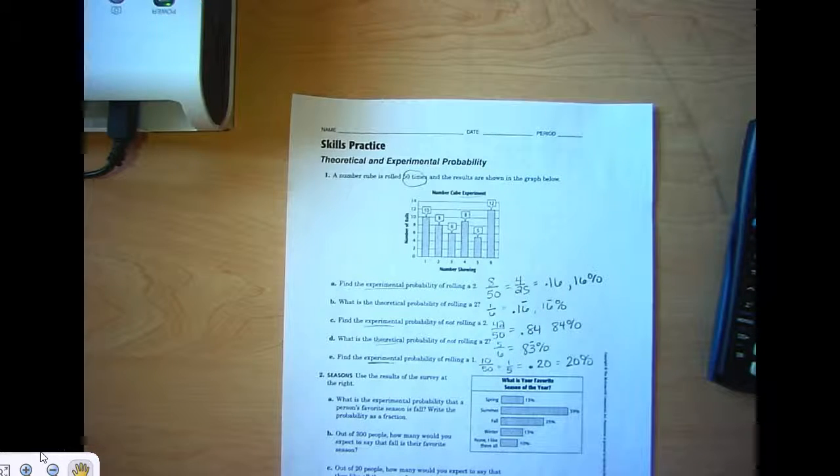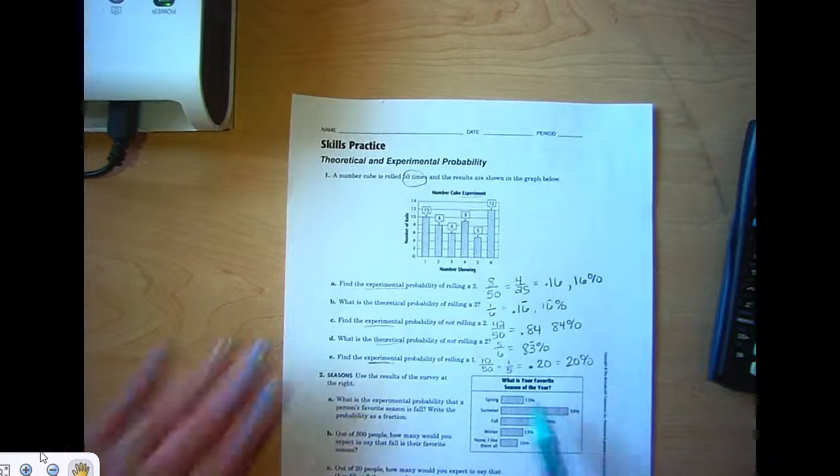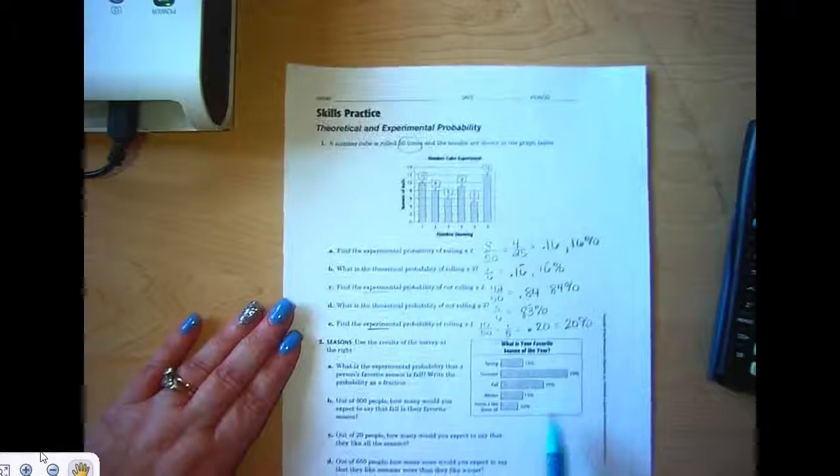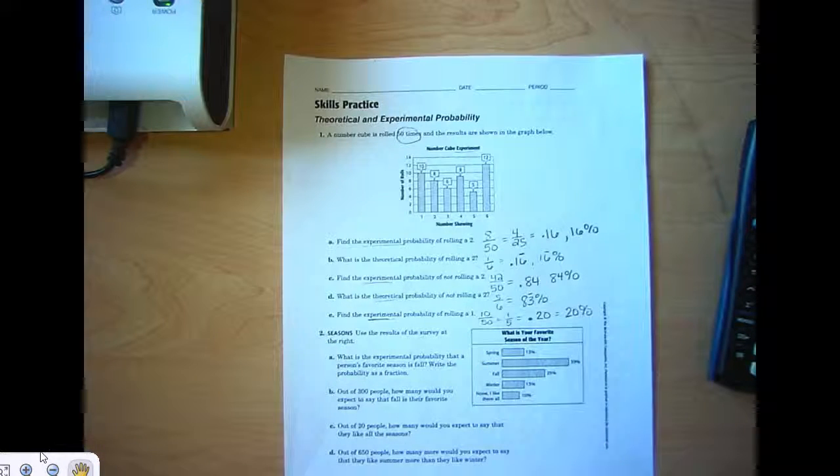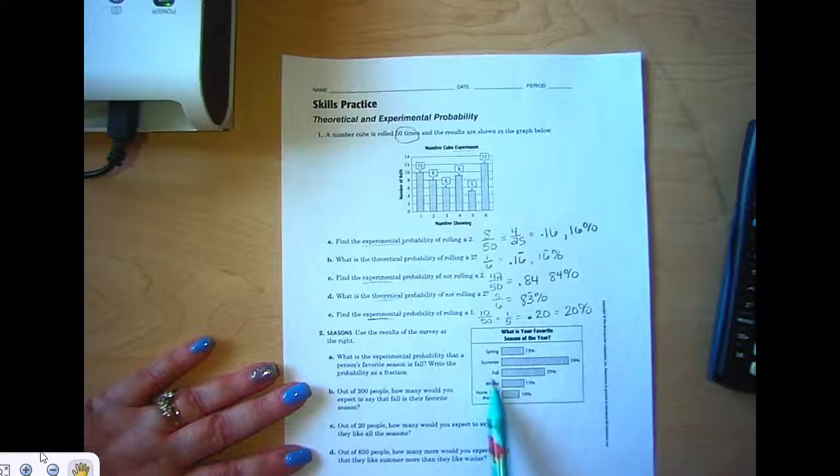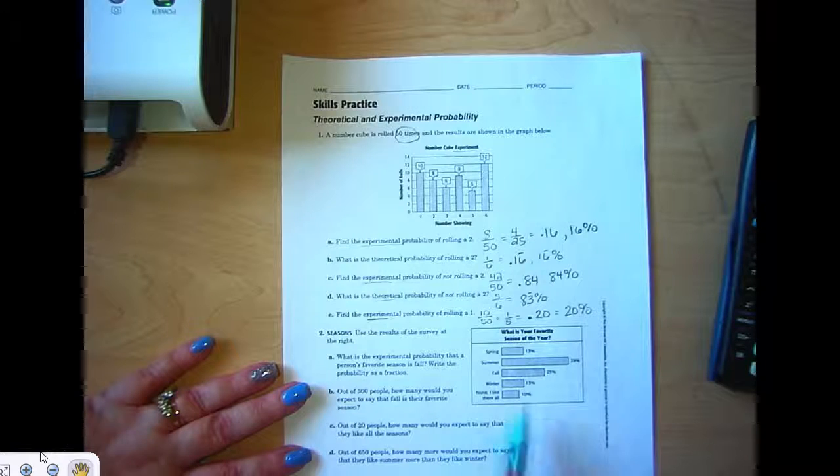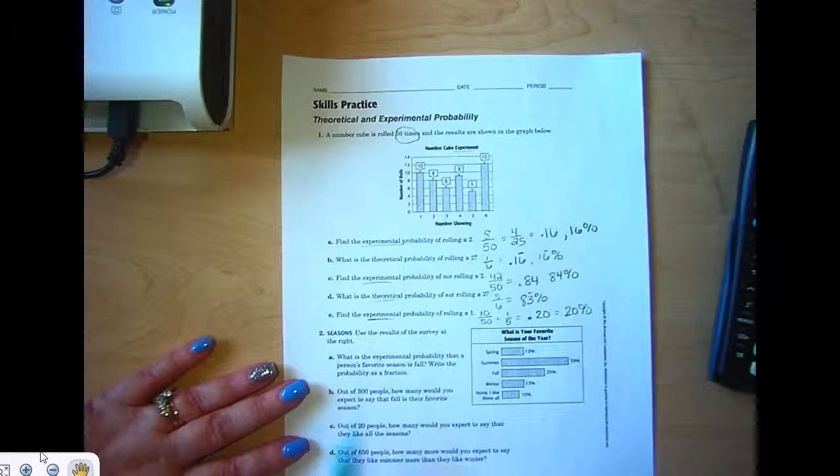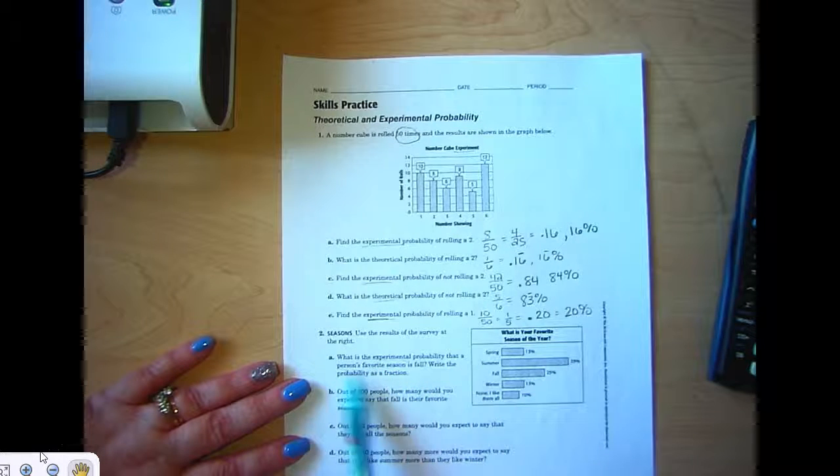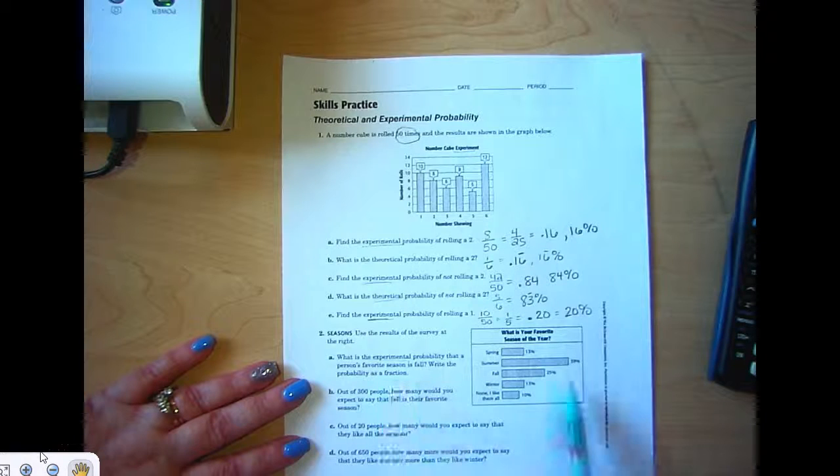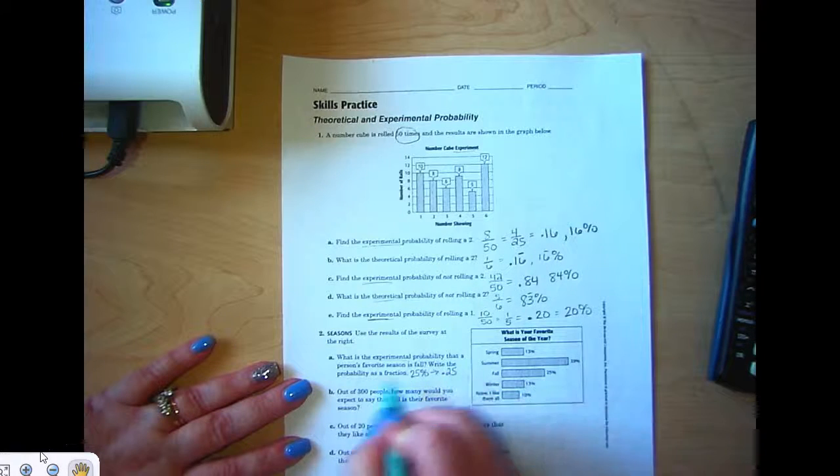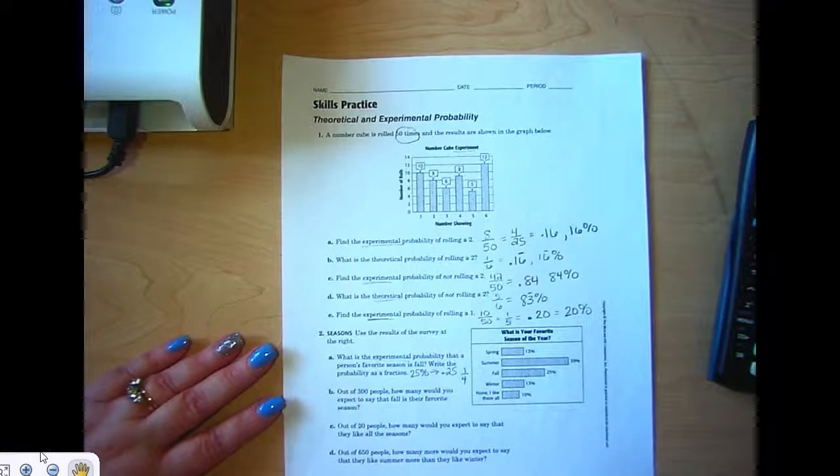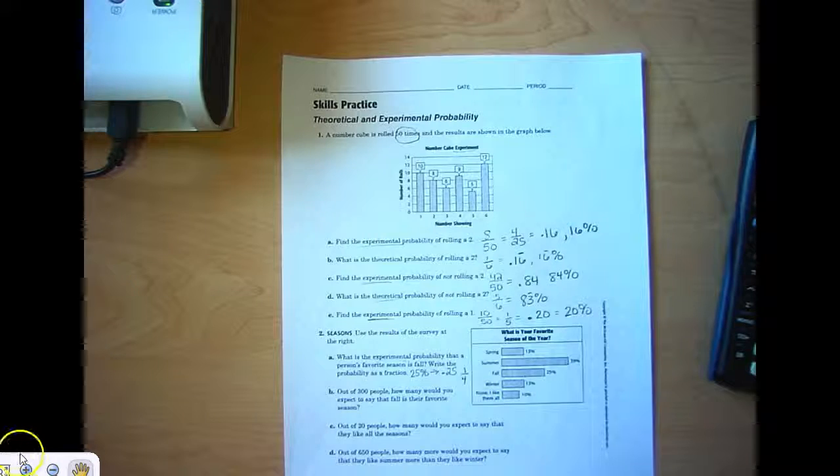If you have questions, pause the video and go see a teacher. To use the survey results at the right: what is your favorite season of the year? They have taken a survey and the respondents answered: 13 percent said spring was their favorite, 39 percent said summer, 25 percent said fall, 13 percent said winter, and 10 percent said they didn't have a favorite—they liked them all. So what is the experimental probability that a person's favorite season is fall? Write the probability as a fraction. Fall is 25 percent. If I change that to a decimal, it's 25 hundredths, and the fraction for that is 1/4.